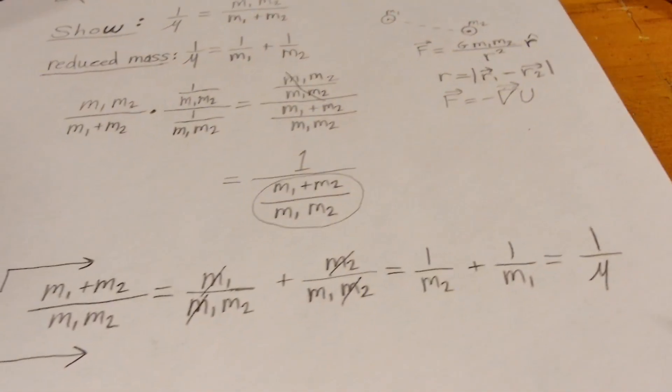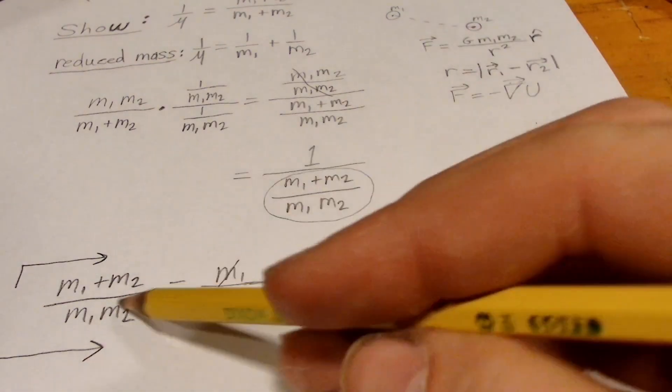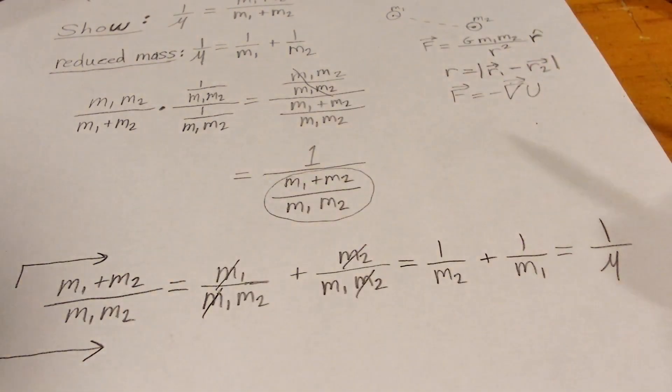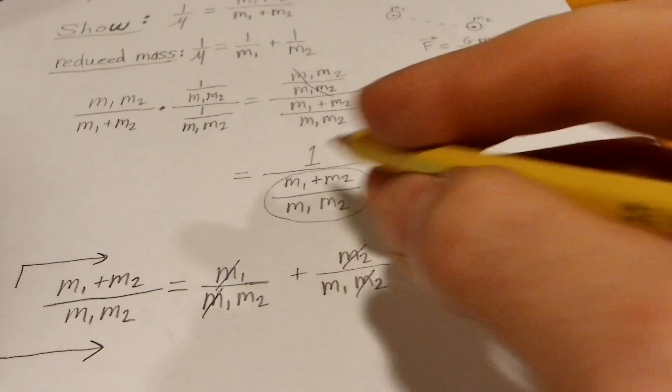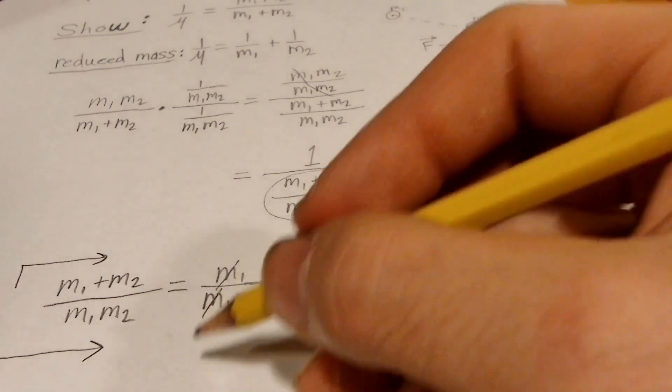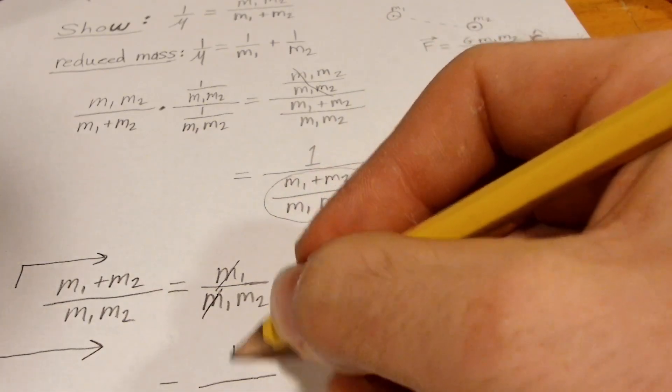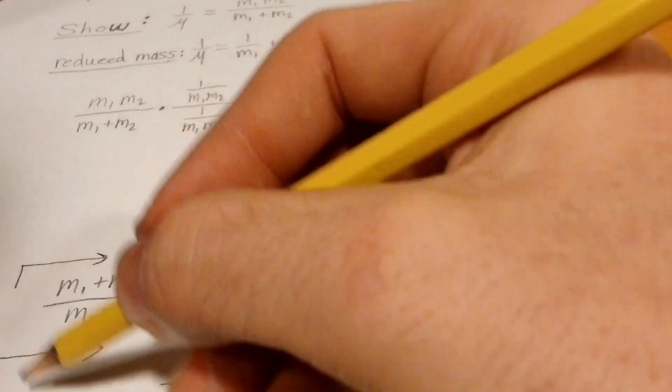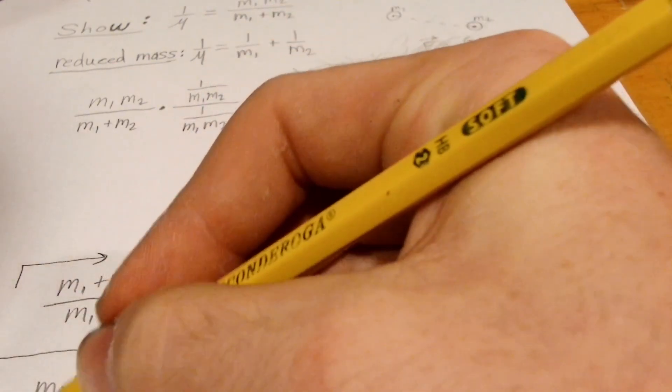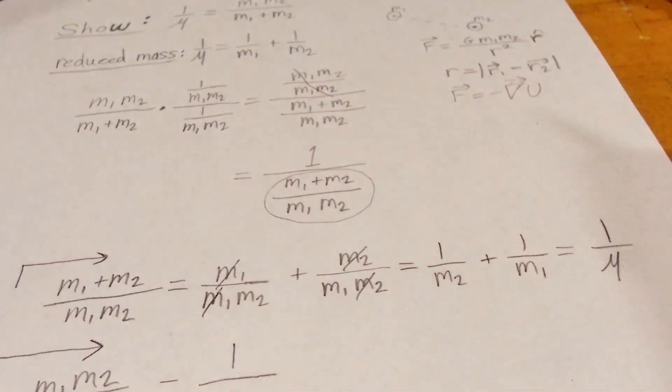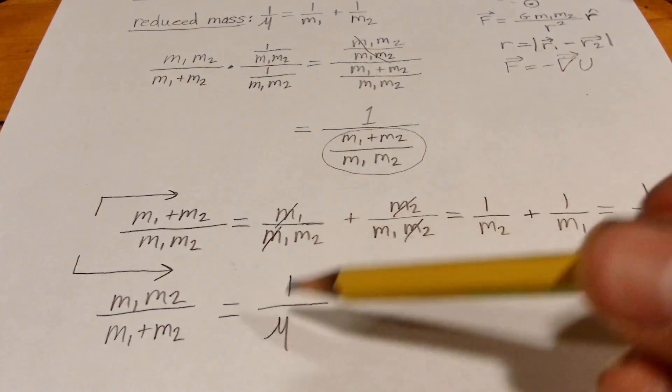And so plugging this, so that means this is equal to 1 over mu and plugging it back into our original equation there, we'll get M1 times M2 over M1 plus M2 is equal to 1 over mu.